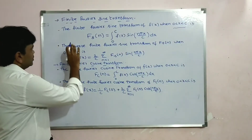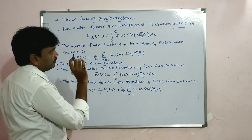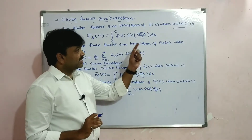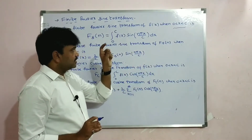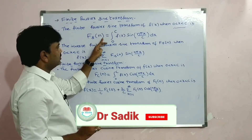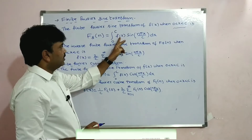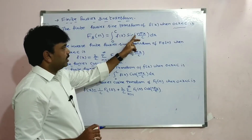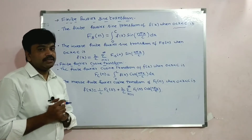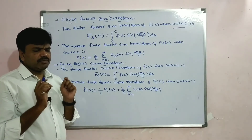The definition of the Finite Fourier Sine Transform of f(x) when 0 < x < c is: Fs(n) equals integral from 0 to c of f(x) times sin(n·π·x/c) dx.